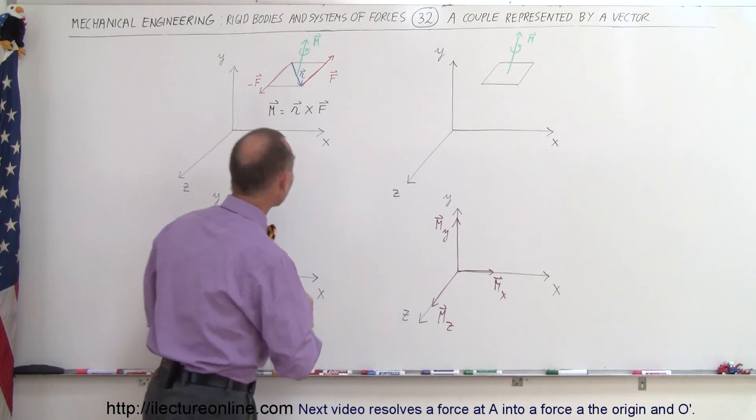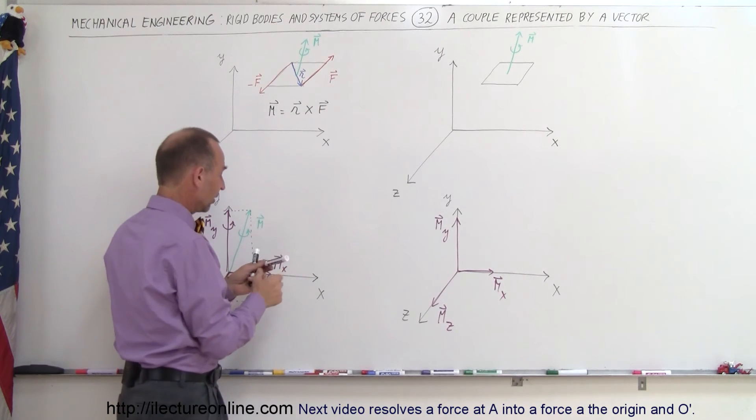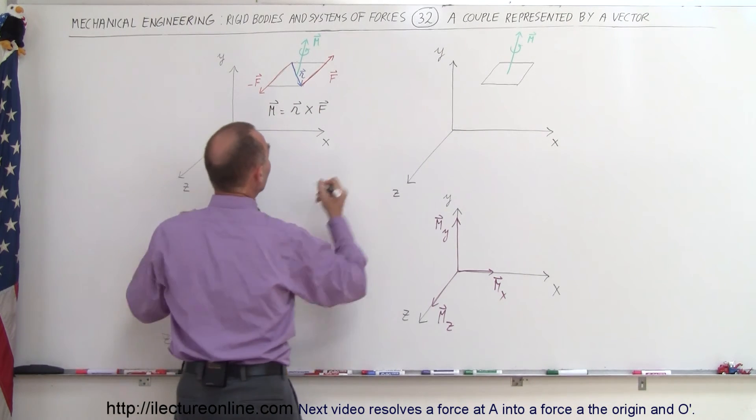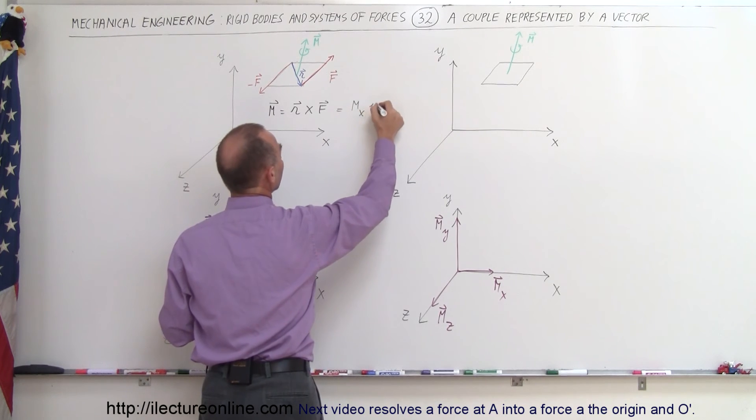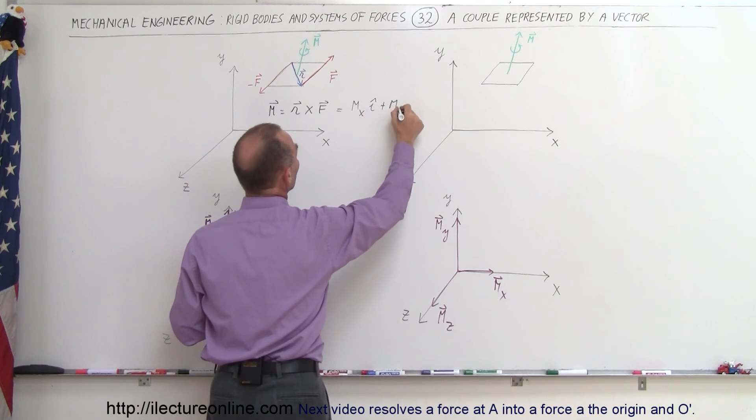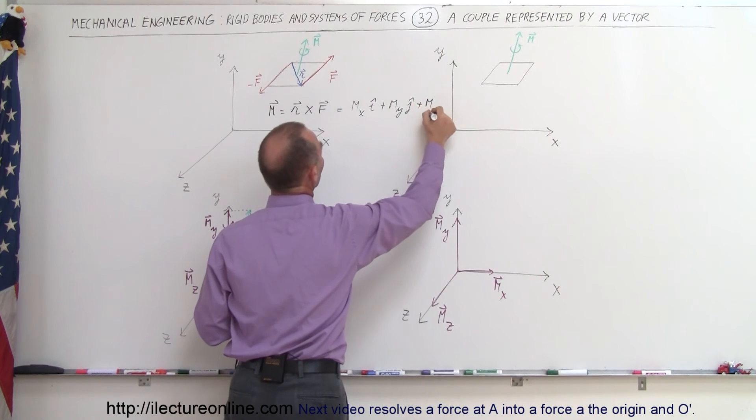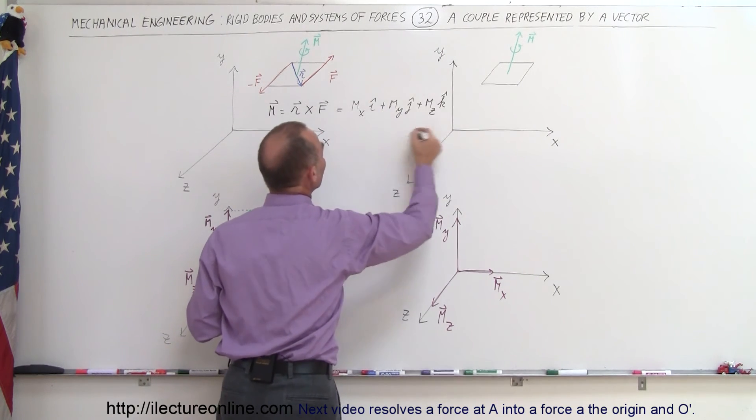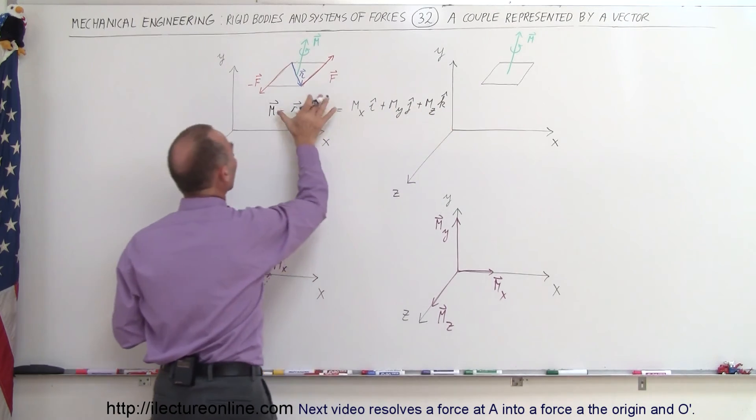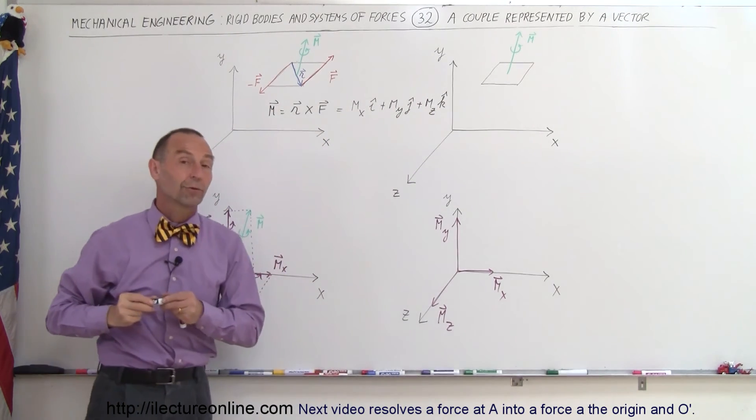And so that means that this couple, R cross F, can also be represented as such. This can be represented as the component in the X direction, plus the component of the moment in the Y direction, plus the component of the moment in the Z direction. And so this would be the vector representation of the couple, the two vectors that form the couple.